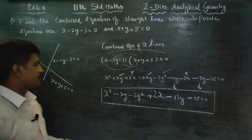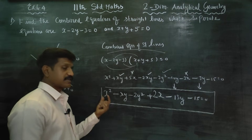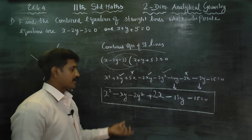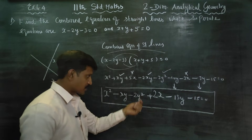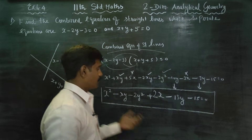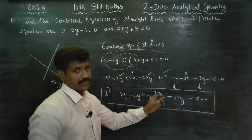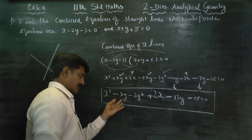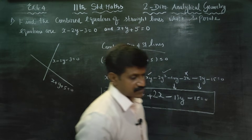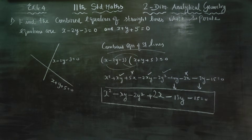The combined equations of the straight line contain all these term types: x squared term, xy term, y squared term, x term, y term, and constant terms. This represents a pair of straight lines, or the combined equations of two straight lines. Thank you.